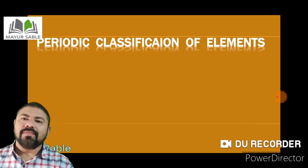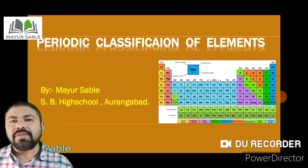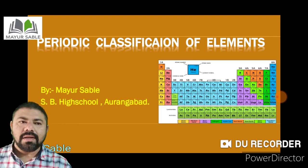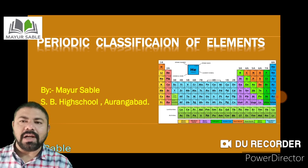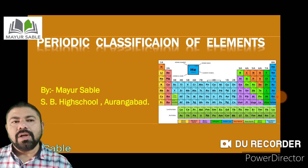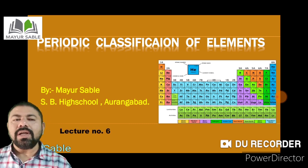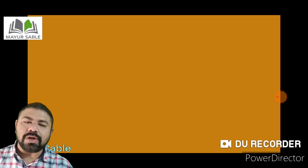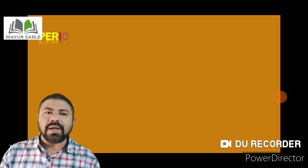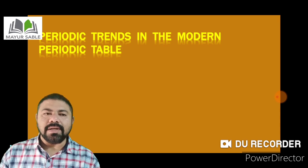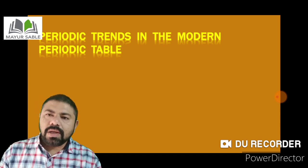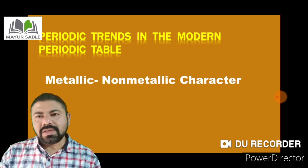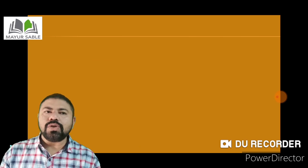Welcome students. We are studying the periodic classification of elements. In the earlier period we studied various aspects related to the periodic table. Today in this lecture we are going to study the periodic trends in a modern periodic table, and under this we are going to study the metallic and non-metallic character of the elements.